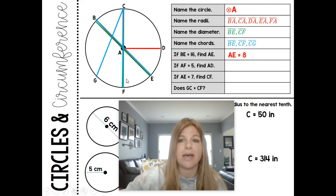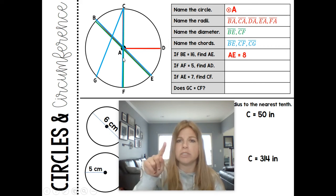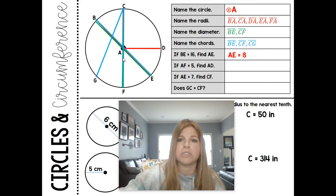If AF is 5, find AD. What do we notice about AF and AD? They're both what? They're both a radius. And radii are all congruent to each other, so their measures are equal to each other. So if AF is 5, then AD is also 5.